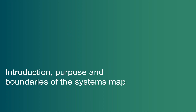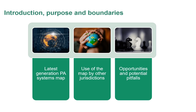The purposes of this video are threefold. Firstly, to provide the latest update to the Physical Activity Systems Map that we've developed with the National Physical Activity Network for Australia — the boundary is at the national level, covering all states and territories. Secondly, to suggest this Australian Systems Map could serve as a template for other jurisdictions, whether they be countries, regions, cities or towns, to build their own Systems Map. And finally, we identify opportunities for practical use as well as potential pitfalls to avoid in using systems approaches for your own specific physical activity context.